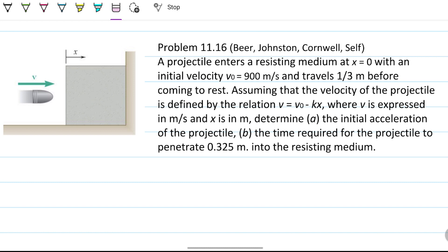The problem statement reads: a projectile enters a resisting medium at x equals zero with an initial velocity v₀ equals 900 meters per second and travels 1/3 m before coming to rest. Assuming that the velocity of the projectile is defined by the relation v equals v₀ minus kx, where v is expressed in m/s and x is in meters, determine (a) the initial acceleration of the projectile, (b) the time required for the projectile to penetrate 0.325 meters into the resisting medium.